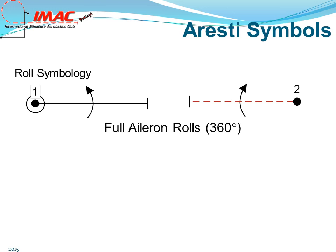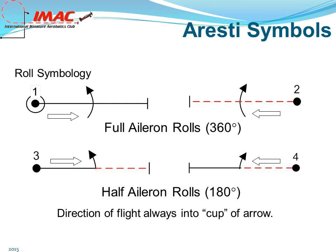Let's continue with roll symbology. A full 360-degree aileron roll is indicated by a cupped arrow drawn symmetrically across the line. The direction of flight will always be into the cup of the arrow; it's the pilot's option to fly this roll either left or right. Half, or 180-degree aileron rolls, are drawn as an arrow beginning at the line. Note that the attitude of the plane would change from positive to negative, or negative to positive, as shown in figure four.